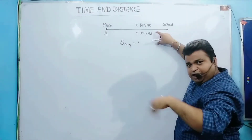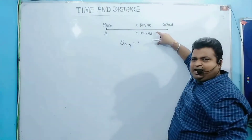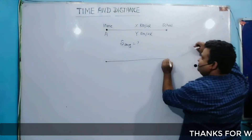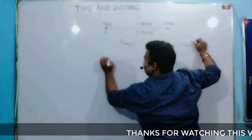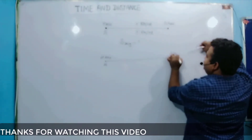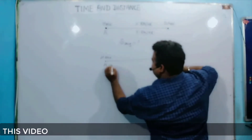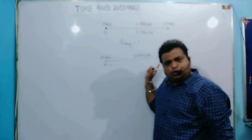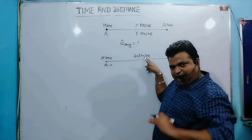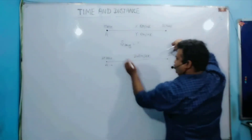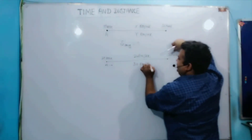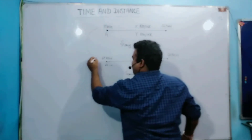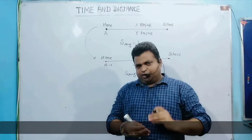I am converting the same thing not into alphabets but into numerical values. So A starts a journey — suppose the speed from home to school is 20 km per hour, and while returning from school to home, his speed is 30 km per hour. Then what is the average speed? I'm just converting alphabets into numerical values.